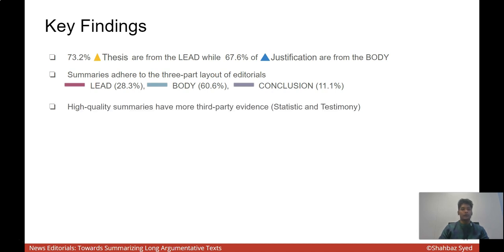We also found out that high quality summaries have more third-party evidence in the form of statistic and testimony evidence types. This is an interesting observation because in news report summarization, such numbers or external propositions can be seen as additional information that need not be in a summary. However, for editorials, this does not seem to be the case.